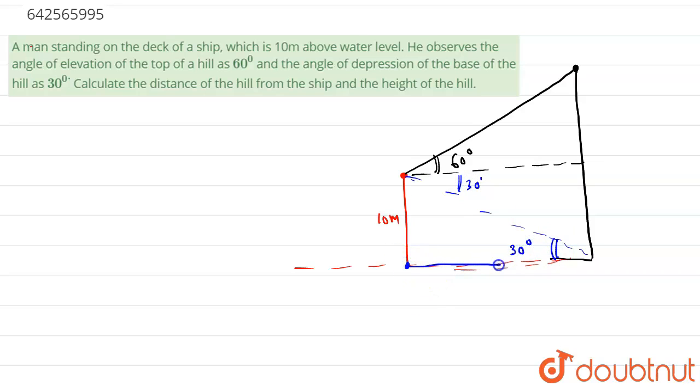Now what we are given: this is 10 meters, and we have to calculate the distance of the hill from the ship and height of the hill. Suppose the distance from the ship to the hill is x meters and the height of hill is h meters.